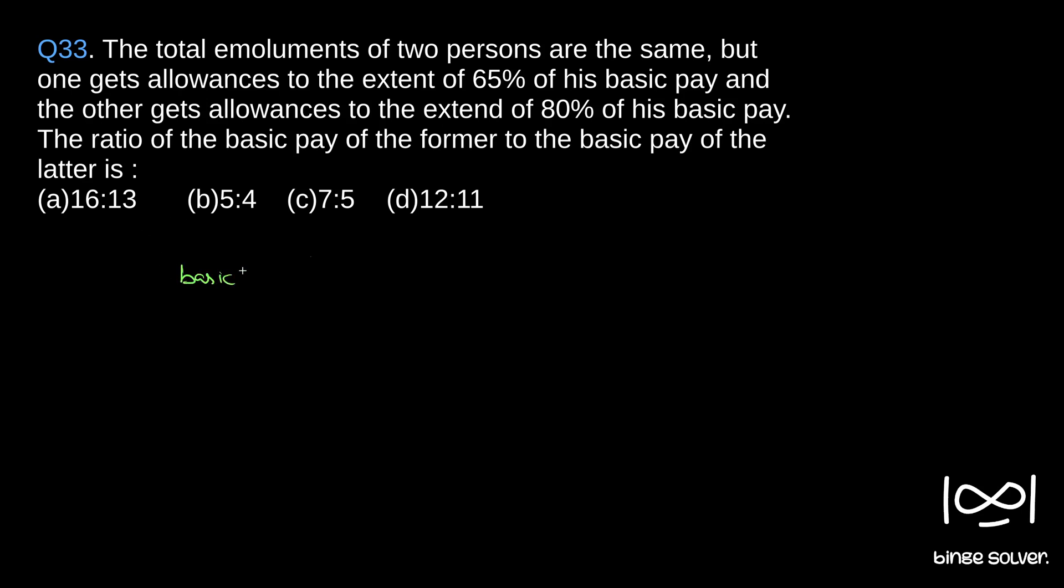100B2. So it is given 100B1 plus 65% of his basic pay becomes 65B1. For this simplicity, I chose 100B1. You could choose B1, then this becomes 0.65B1. It doesn't matter.